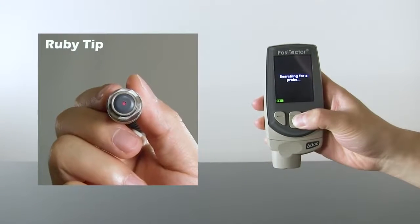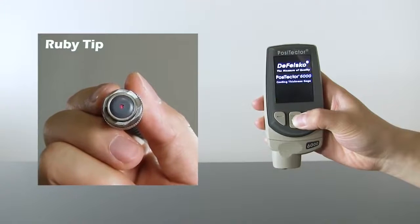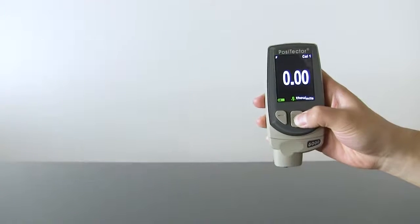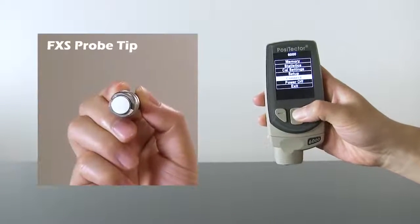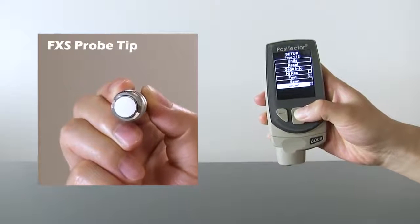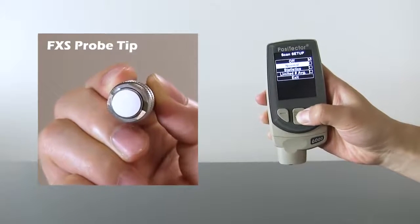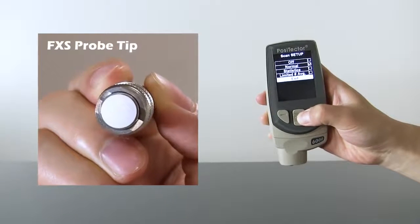Durable ruby-tipped probes on our most popular probe models prevent wear and maintain the factory calibration. For rough coatings, the Positector 6000 F-XS and F-H-XS probes feature zirconia-toughened alumina wear faces.